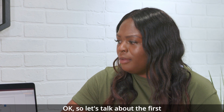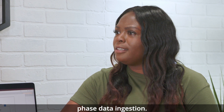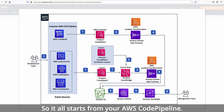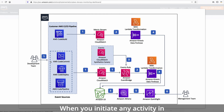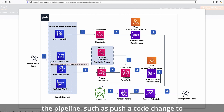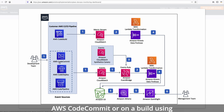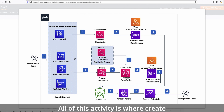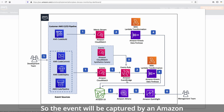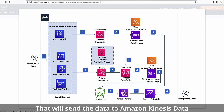Let's talk about the first phase: data ingestion. It all starts from your AWS CodePipeline. When you initiate any activity in the pipeline, such as pushing a code change to AWS CodeCommit or running a build using AWS CodeBuild, all of these activities will create an event. The event will be captured by an Amazon EventBridge events rule that will send the data to Amazon Kinesis Data Firehose delivery stream for downstream processing.